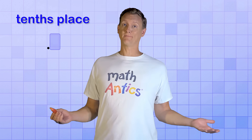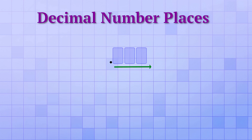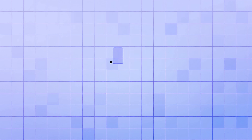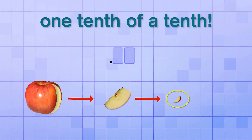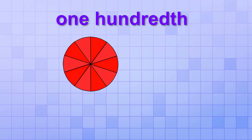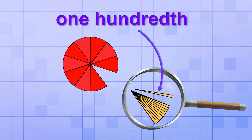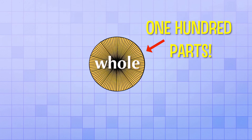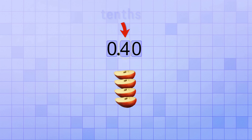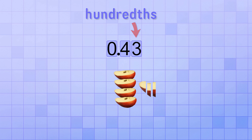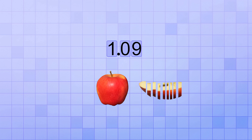But there's more — more decimal number places, that is. The tenths place allows us to count in between the ones, but what if we want to count amounts that are in between the tenths? The decimal number places keep on going to the right, and each time they count amounts that are 10 times smaller than the previous amount. So if the tenths place counts fractions that are a tenth of 1, then the next number place over will count amounts that are one tenth of a tenth. One tenth of a tenth is called one hundredth, and it's the fraction you get if you take a tenth and divide it into 10 equal parts. It's called a hundredth because it's the same fraction you'd get if you take a whole and divide it up into a hundred parts — its fraction form looks like this: one over one hundred. Just like tenths could be used to represent amounts in between the ones, hundredths can be used to represent amounts in between tenths. And just like ten tenths equal one, ten hundredths equal a tenth.